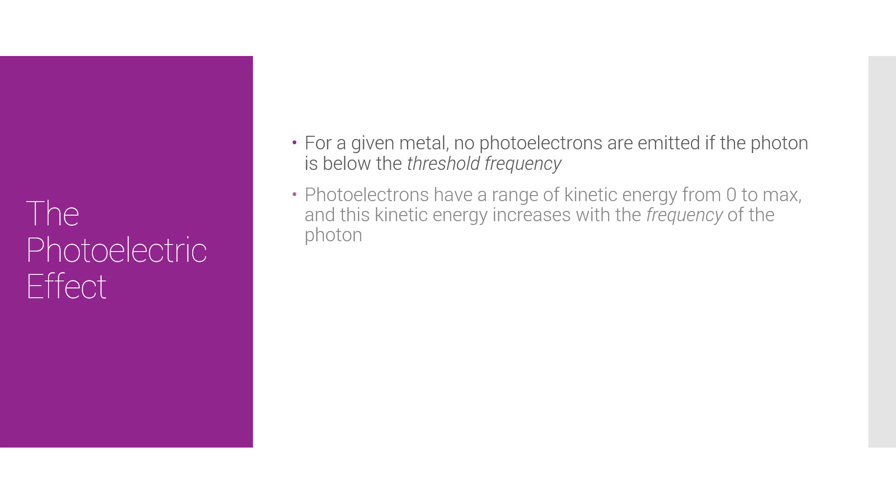The key points here are that, for a given metal, no photoelectrons are emitted if the photon is below the threshold frequency, that is a very important term. Photoelectrons can have a range of kinetic energy from zero to max, and this kinetic energy increases with the frequency, not the intensity, the frequency of the photon.